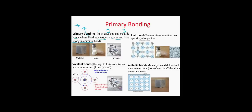A covalent bond is a sharing of electrons between two or more atoms. Here we have methane, and we can see that carbon shares each of its four valence electrons with four hydrogens, which also share their single valence electron, so that carbon has eight and each hydrogen has two — they're all happy and their valence shells are filled.